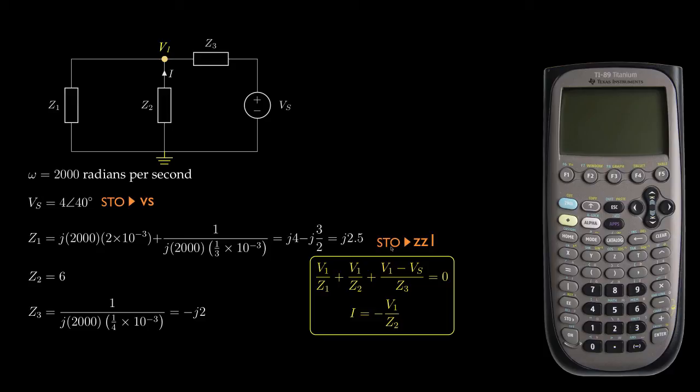Then I'll store the impedance Z1 into a memory variable I'll call ZZ1. Now, I'd prefer, of course, to use a variable called Z1, but within this calculator, that variable name is reserved for other uses. Next, I'll store the impedance Z2 into the variable I'll call ZZ2, and then I'll store the impedance Z3 into a variable I'll call ZZ3.